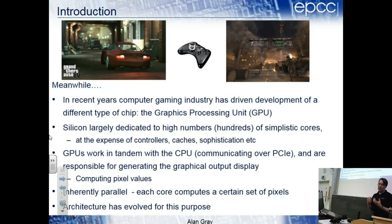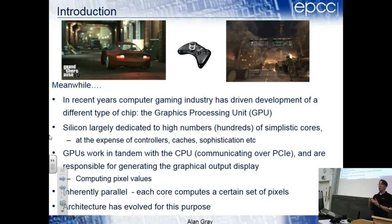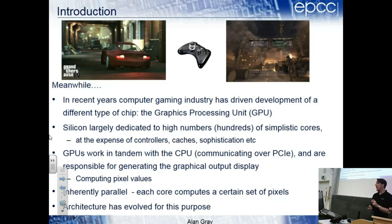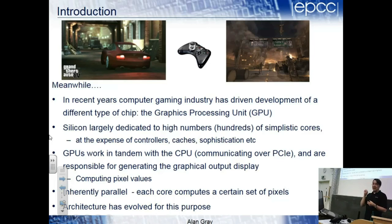About ten years ago this stopped, and now we're not getting faster cores - we're getting more cores together. Moore's law stopped translating into increases in clock speed and instead translated into higher parallelism on a CPU: more cores per CPU.